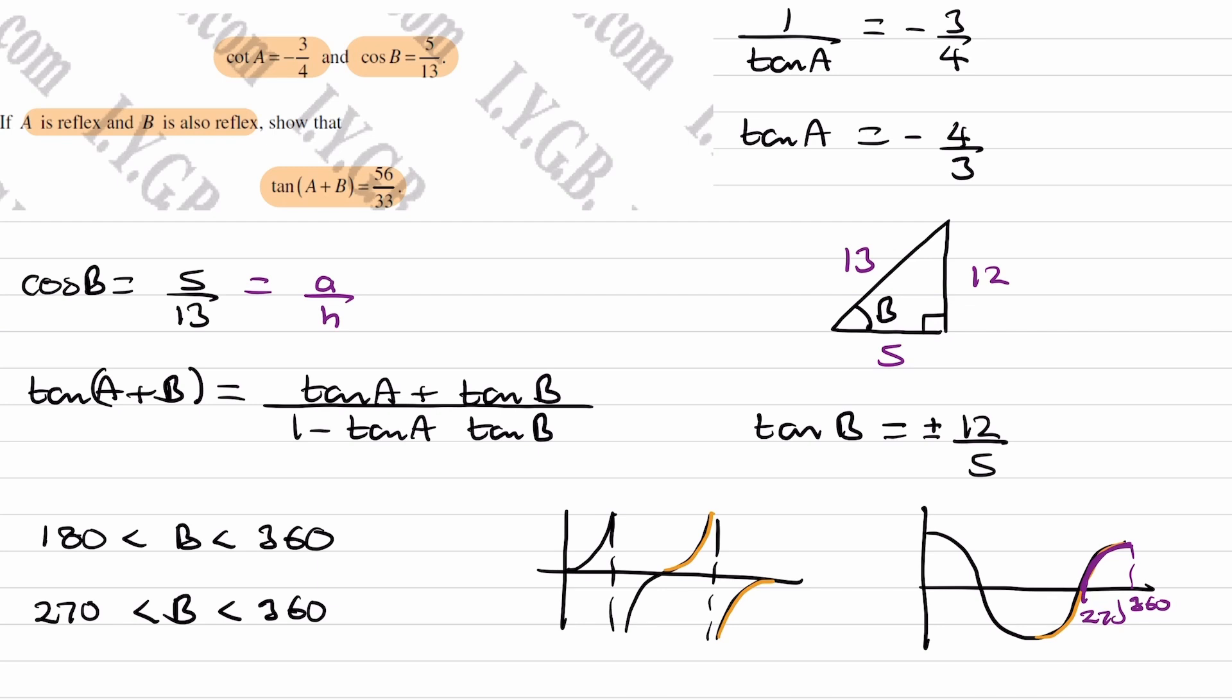And if it's between 270 and 360, for the tan graph, we must be looking at this part here in purple. That bit is negative, or tan of those angles is negative. So tan B is then minus 12 over 5.